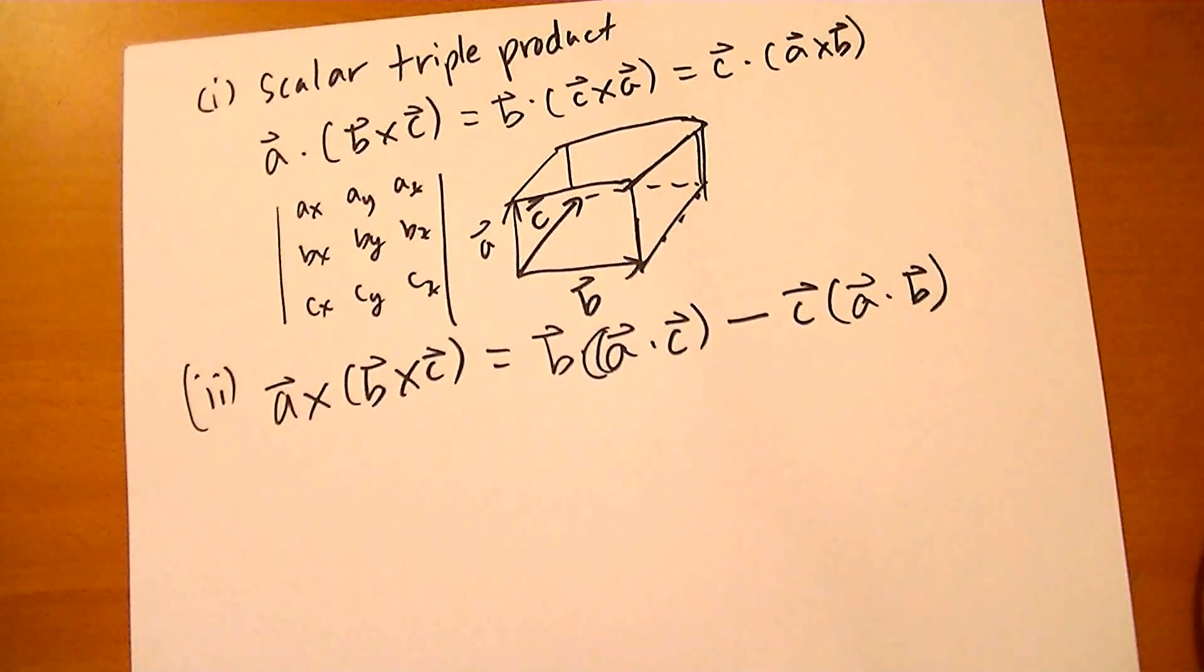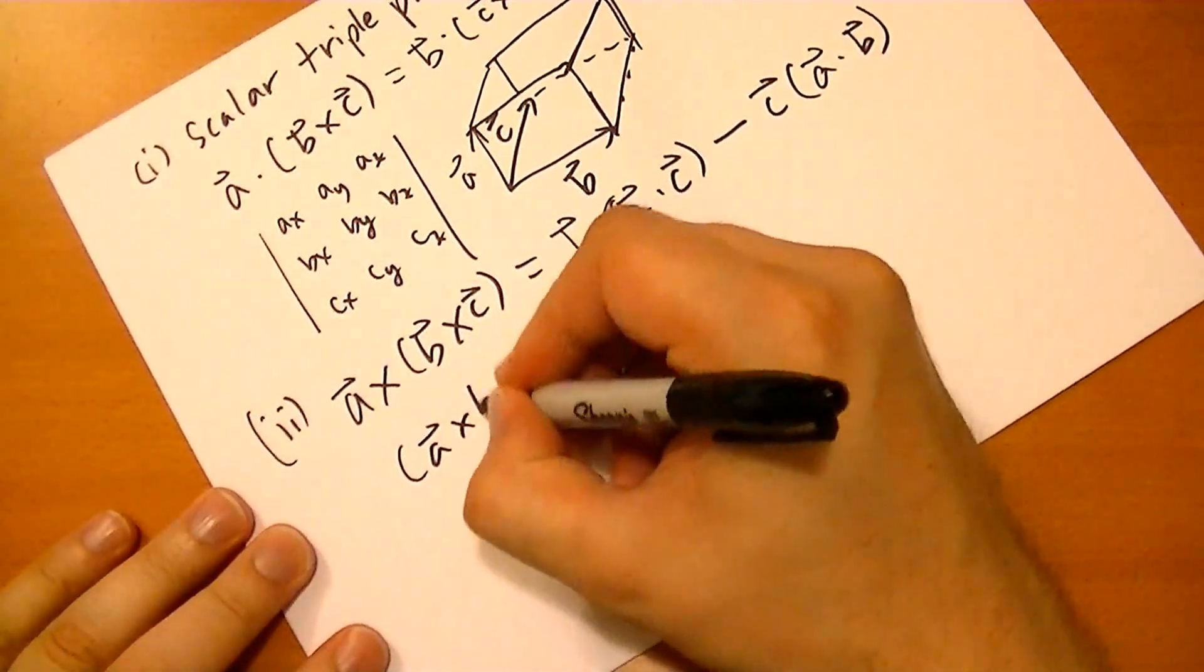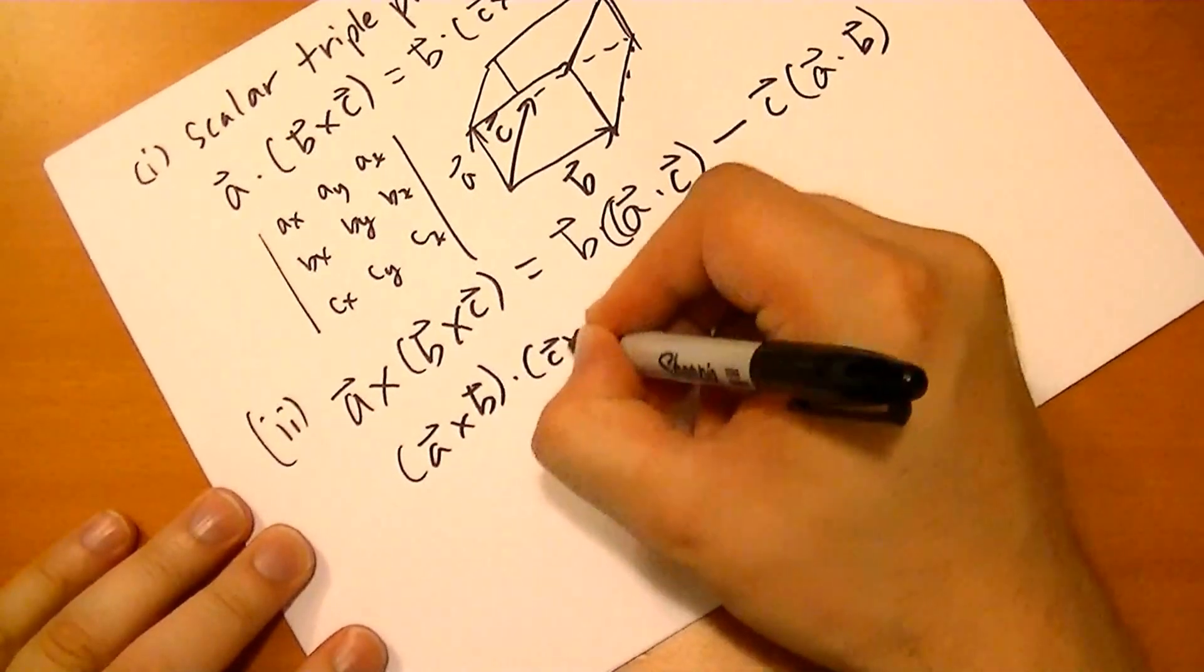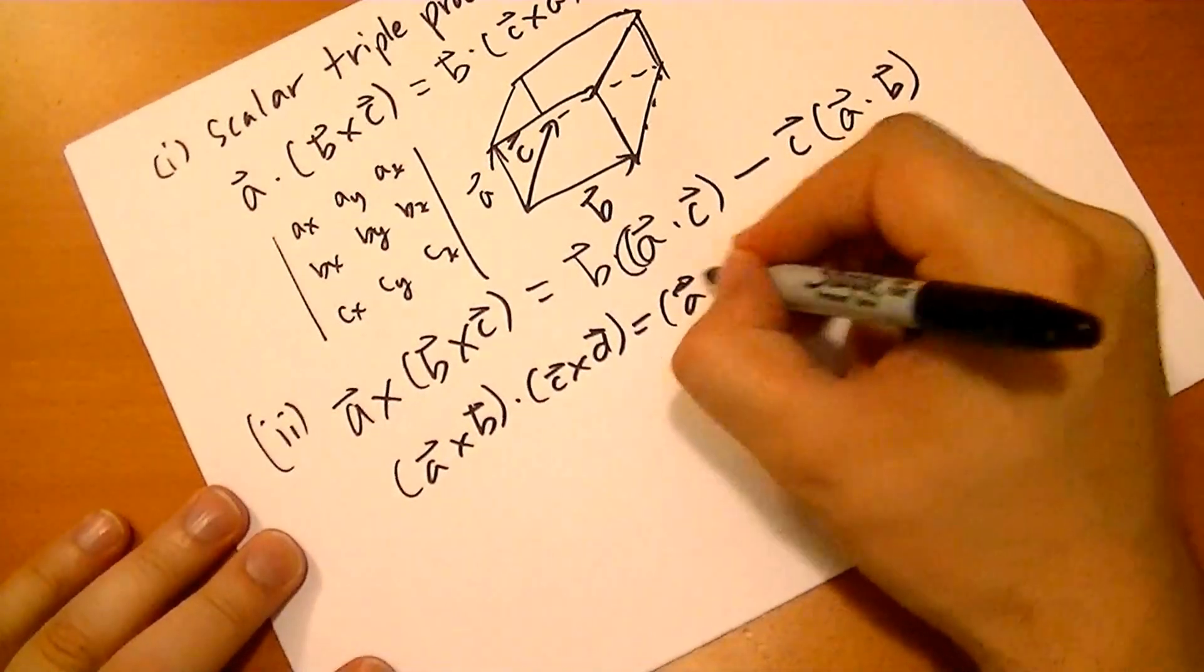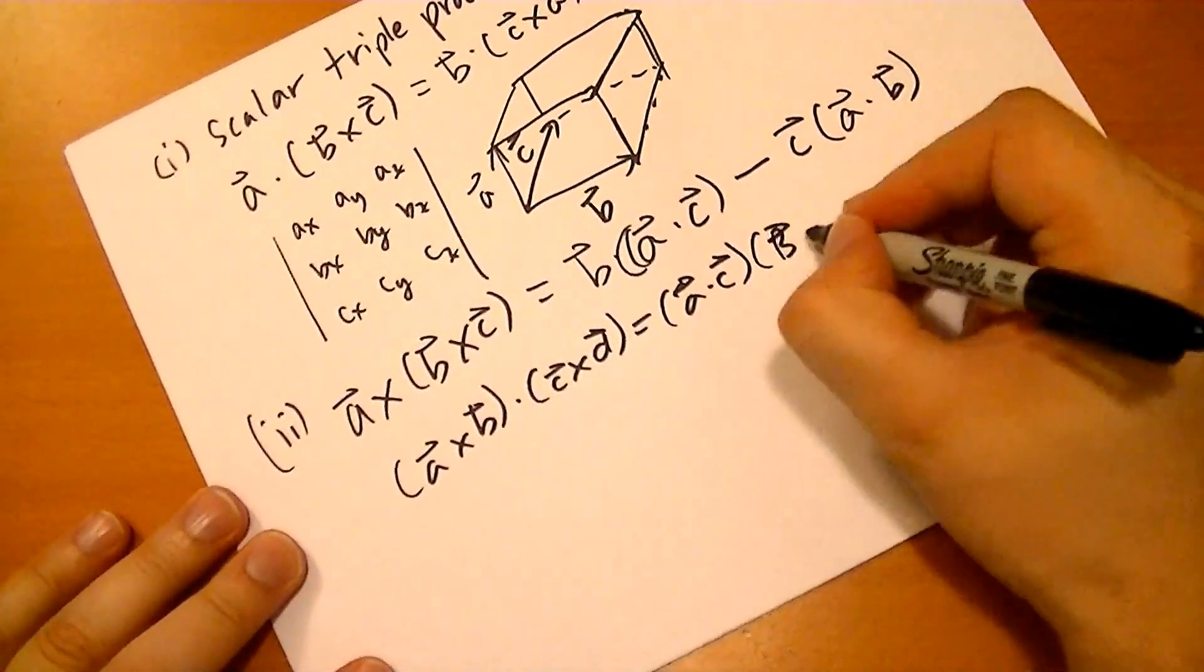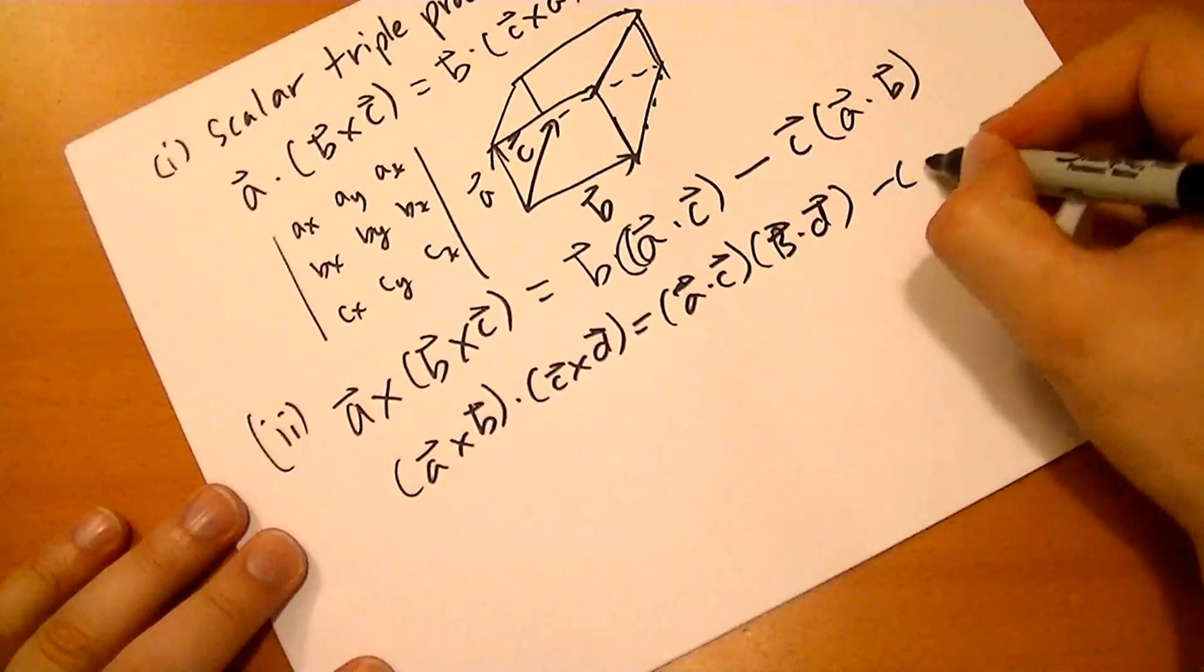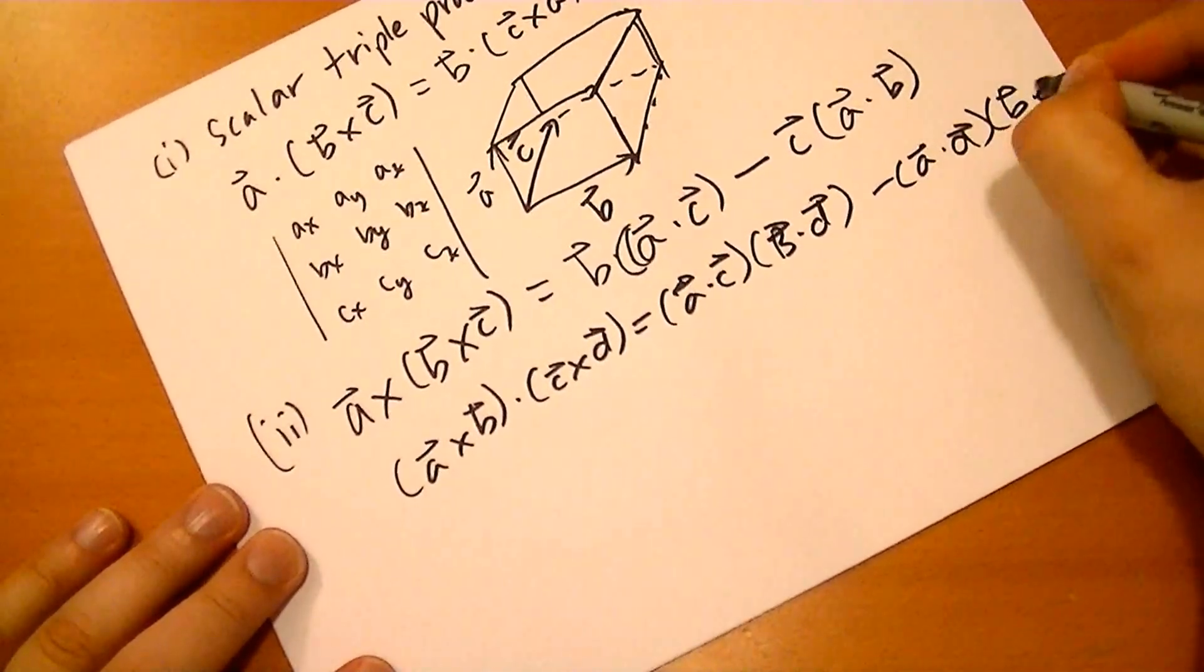Incidentally, using these two rules, all higher triple cross products can be derived. The two that they list in the book that are interesting are (A cross B) dot (C cross D). And that turns out to be (A dot C)(B dot D) minus (A dot D)(B dot C).